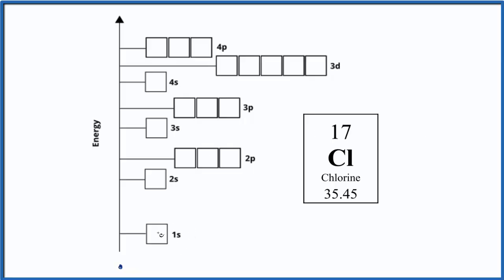So we'll start with our 1s — we have 2. Next energy level, 2s — that holds 2. Then 2p; we always spread them out before we pair them up. We've used 10 and have 7 more. We have our 3s — that uses 2, so we have 5 more for 3p: 1, 2, 3 — spread them out — 4, 5. This is the orbital diagram for chlorine.